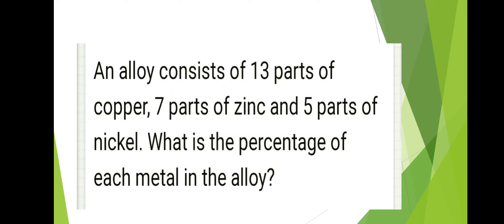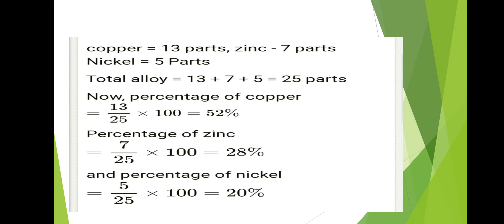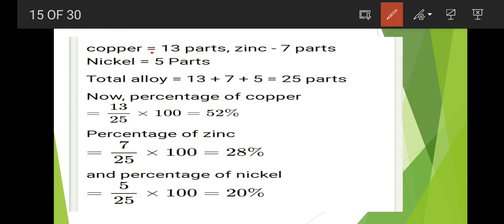Next: an alloy consists of 13 parts of copper, 7 parts of zinc, and 5 parts of nickel. What is the percentage of each metal in the alloy? Copper is 13, zinc is 7, and nickel is 5. Total alloy is 25 parts. To find percentage of copper: 13 by 25 into 100 gives 52 percent.